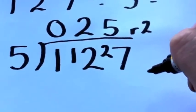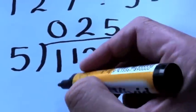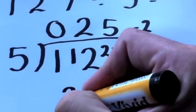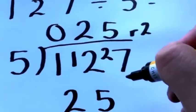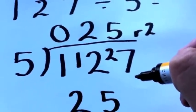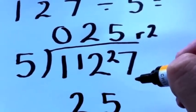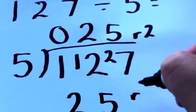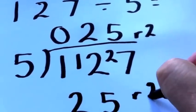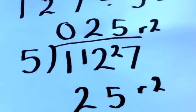So it doesn't make sense, this method, if you're trying to teach somebody that 127 can be split 5 times and it makes 25 with a remainder of 2, but the method works every time. And that's it.